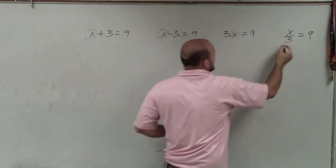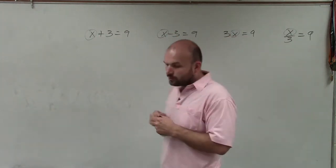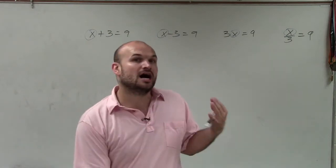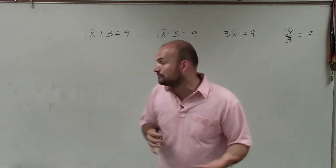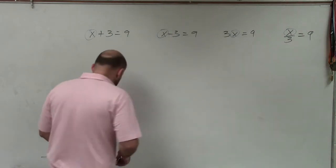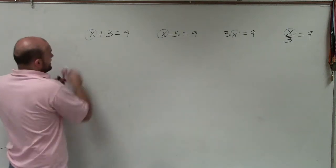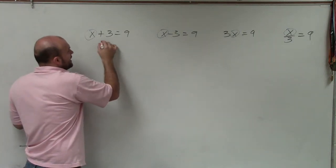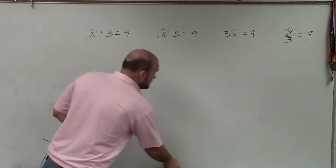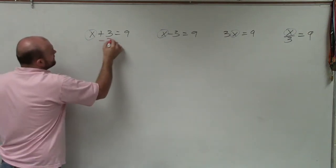So we circle the variable and say, all right, what do I need to do or what is happening to that variable that I need to undo, that I need to apply the inverse operation for? So here, you can say that my variable is being added by 3, so I need to apply the inverse operation.